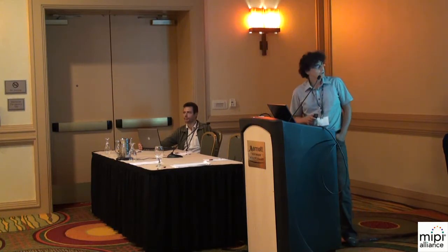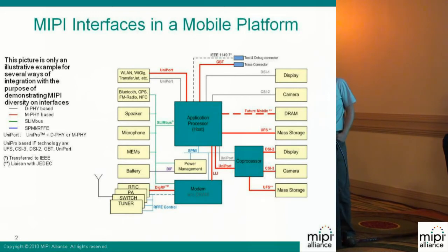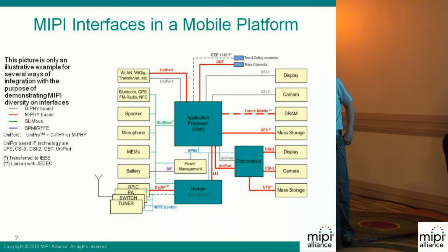UniPro actually uses two kinds of physical interface: D-PHY or M-PHY. When using UniPro with D-PHY interface, we call it UniPort-D. And when using UniPro with M-PHY interface, we call it UniPort-M. This is why you see everywhere here written UniPort.